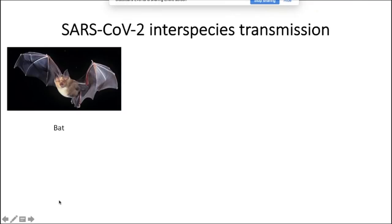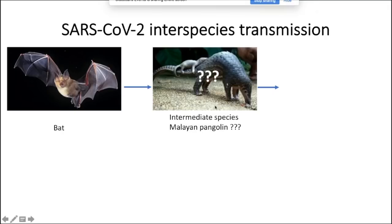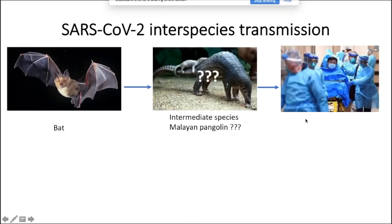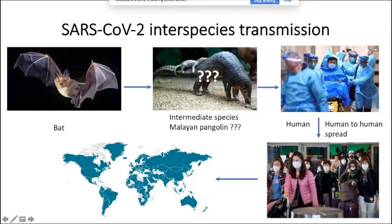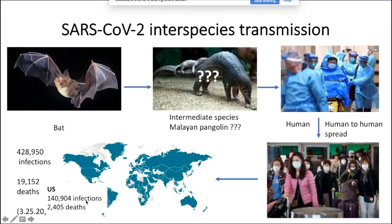With that background, we can look at the new SARS-CoV-2 epidemic. We think the bat was the source, with some speculation that the intermediate species is the Malayan pangolin, though this has not been proven. The virus transferred to humans, where it became very contagious. As of March 25th, there were 428,950 infections and 19,000 deaths worldwide, and 140,000 infections in the U.S. with 2,400 deaths. This is behaving very differently from either SARS or MERS—it is highly contagious and spread much more rapidly all over the world.